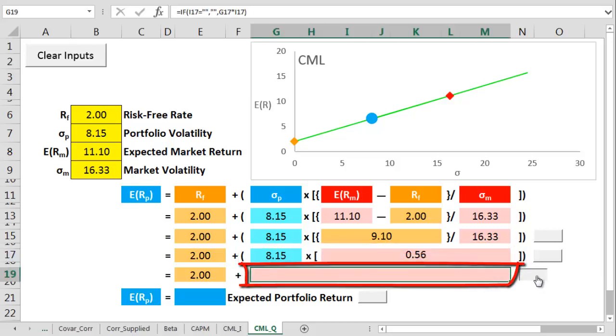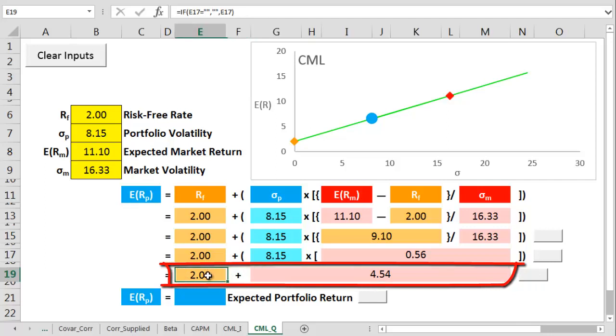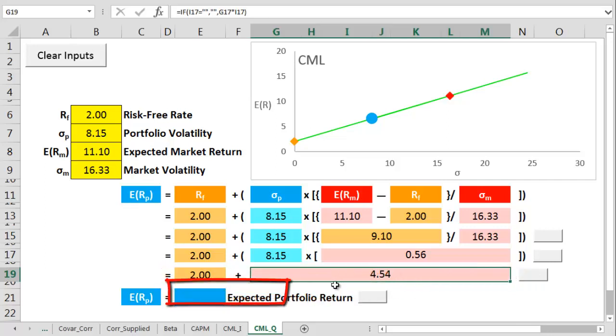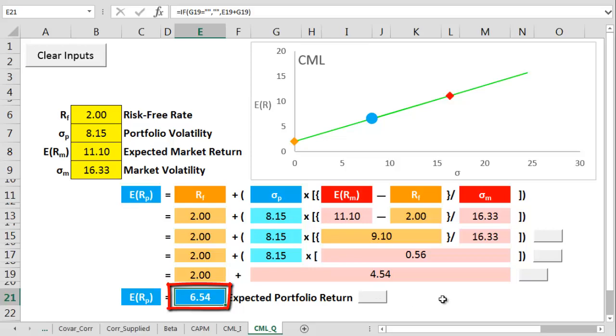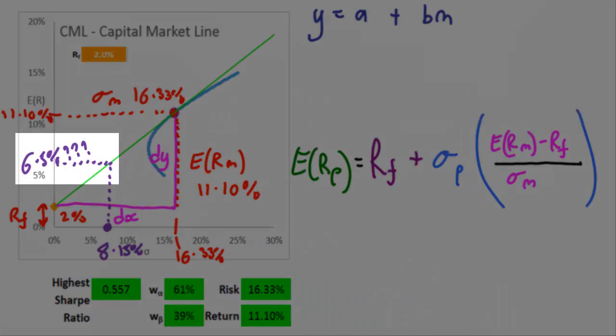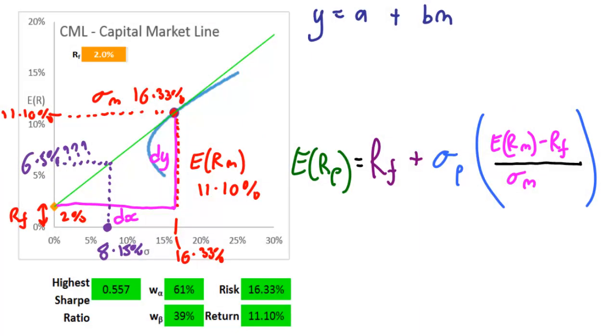And then we multiply 8.15% by 0.56% to get to a funky 4.54% and finally we add two on top of that to get to a final 6.54% or just a smidge away from the guess of 6.5%. So now we've derived the capital market line equation.